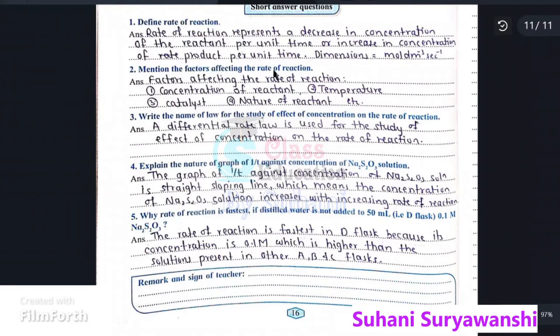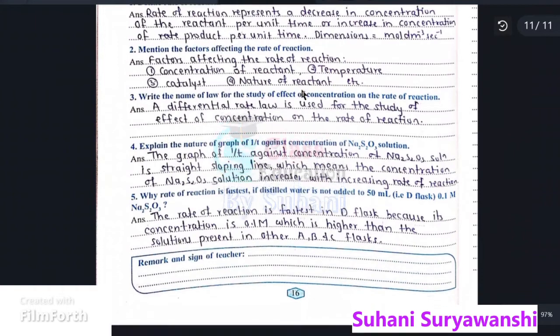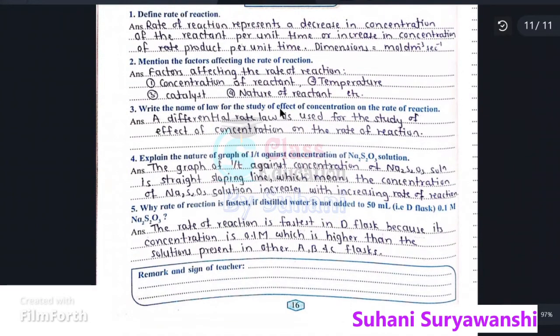Mention the factors affecting the rate of reaction: concentration of reactant, temperature, catalyst, nature of reactant, etc. Write the name of law for the study of effect of concentration on the rate of reaction, that is differential rate law.